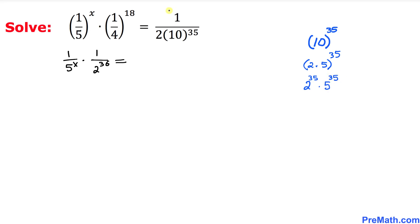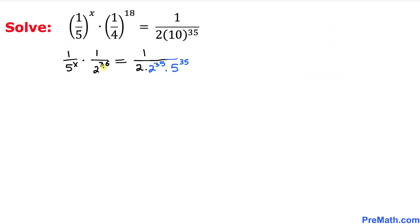So on the right hand side, the fraction becomes 1 divided by 2 times 2 power 35 times 5 power 35. And on the left hand side of this equation, we can write 1 divided by 5 power x times 2 power 36 equals that right hand side expression.